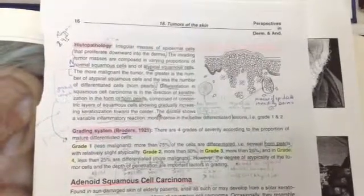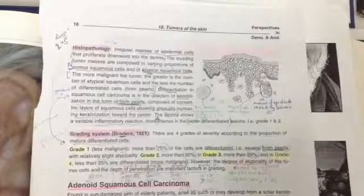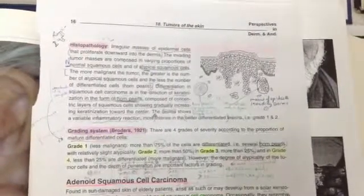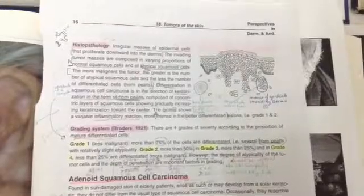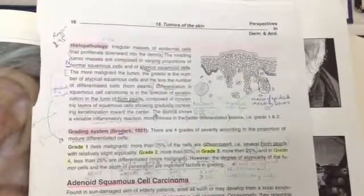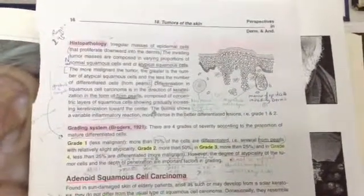Differentiation of squamous cell carcinoma in the direction of keratinization occurs in the form of horned pearls composed of concentric layers of squamous cells showing gradually increasing keratinization towards the center. The dermis shows variable inflammatory reaction, more intense in better differentiated tumors, for example grade 1 and 2.